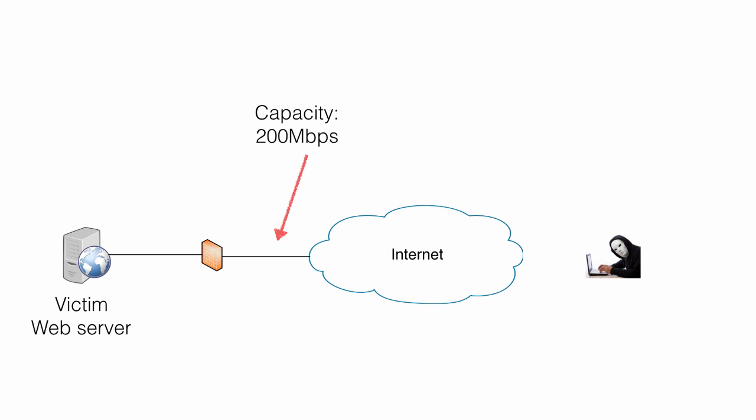If EvilBob, who had the intention to attack the web server, has more than 200 megabits of bandwidth at home, he could in theory create the attack all by himself. However, doing that would most probably draw attention to him from his ISP when generating that massive amount of traffic.